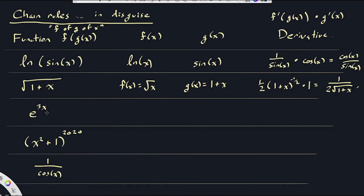For e to the 3x: I think of this as a process — first multiply x by 3, then take e to the result. So f(x) = e^x and g(x) = 3x. The derivative is f'(g(x)) times g'(x): e to the 3x, times 3 — and putting the constant first, that's 3e to the 3x.